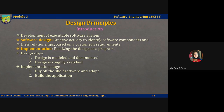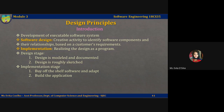Software design and implementation is the stage in the software engineering process at which an executable software system is developed. For simple systems, software design and implementation is software engineering, and all the other activities are merged with this process. However, for large systems, software design and implementation is only one of a set of processes which is involved in software engineering.